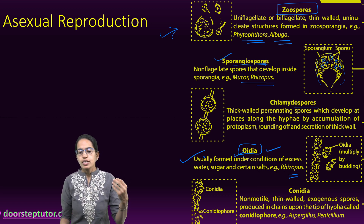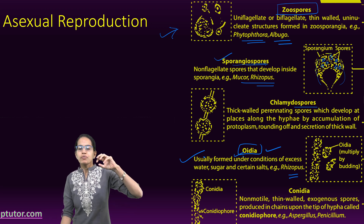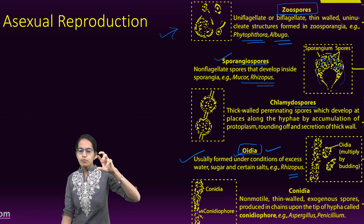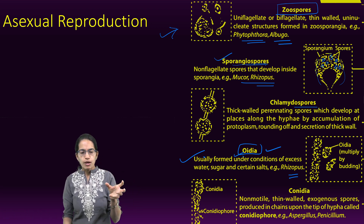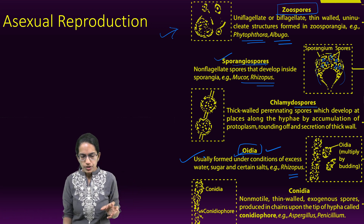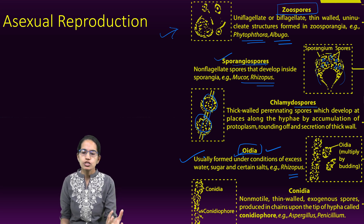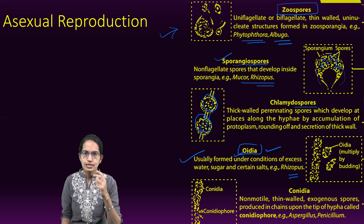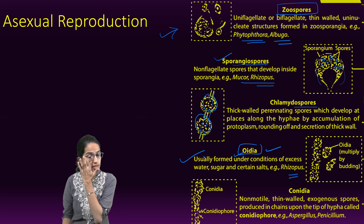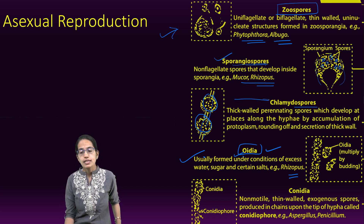Chlamydospores are formed when spores develop along the hyphae. As you can see, this is the hyphae, and along the hyphae spores develop. This occurs because of the accumulation of protoplasm and a thick cell wall is secreted — this is known as a chlamydospore.